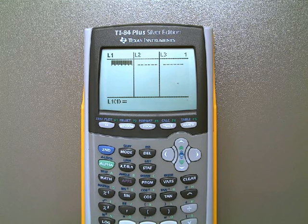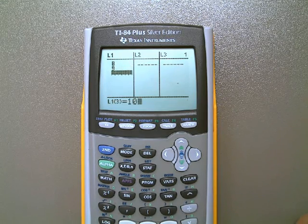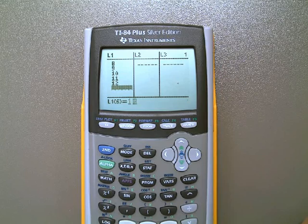It's going to ask me, list 1 and list 2, what do I want to type in? List 1 happens to be the x-coordinates. In this case, that's time, so I'm going to type in 8, 9, 10, 11, 12, 13, and 14.